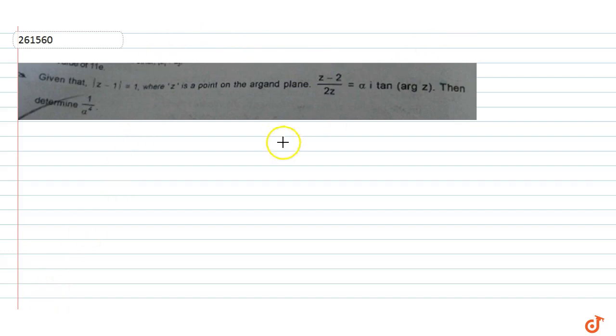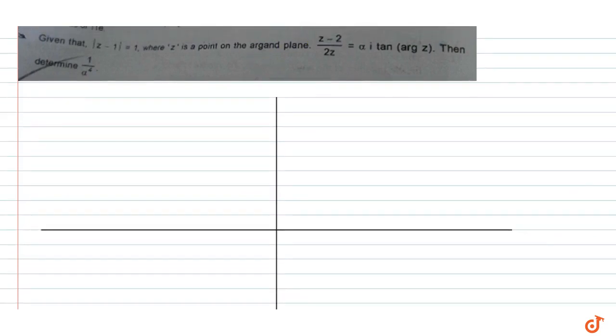So if we draw a figure, then we will understand what we can see. Modulus of z minus 1 is equal to 1. What is the center? It is 1. And what is the radius? It is 1.